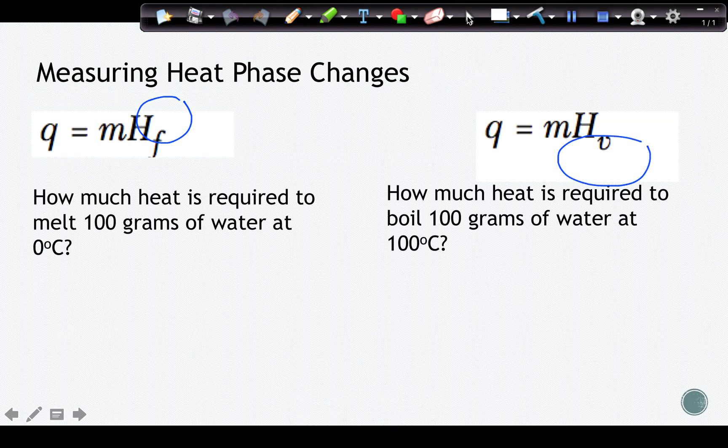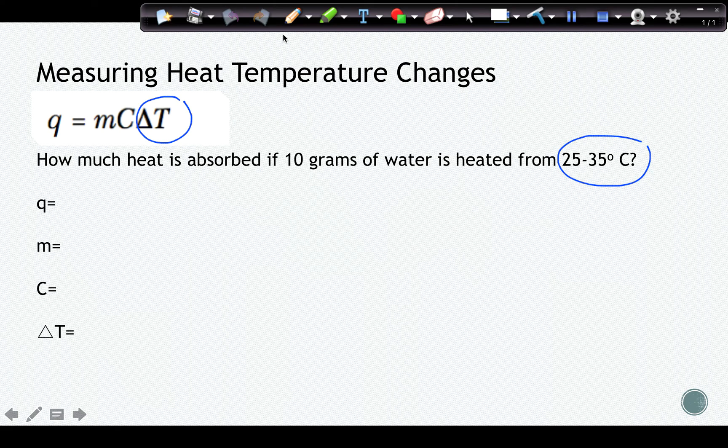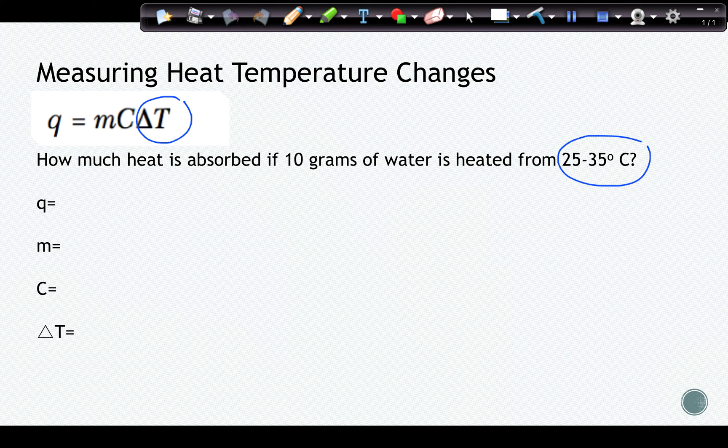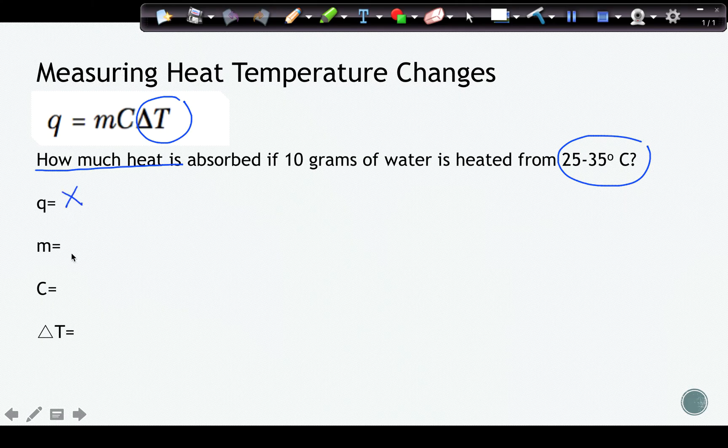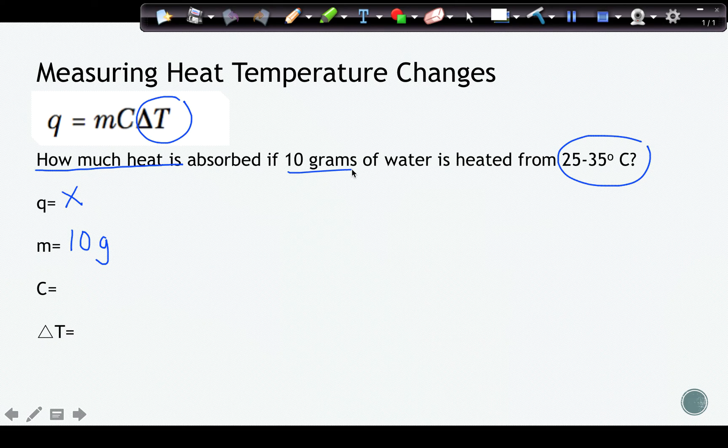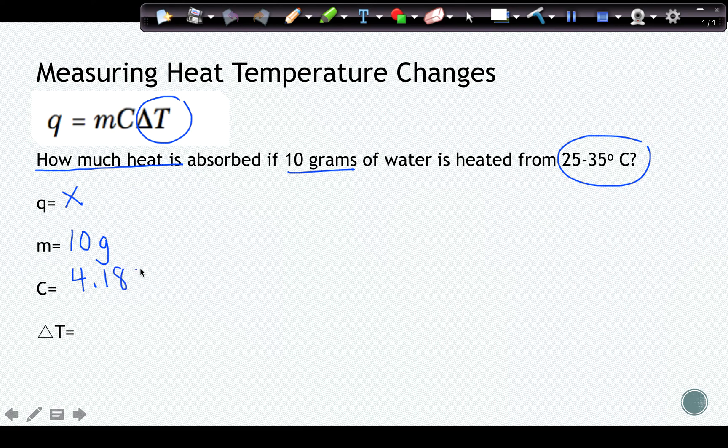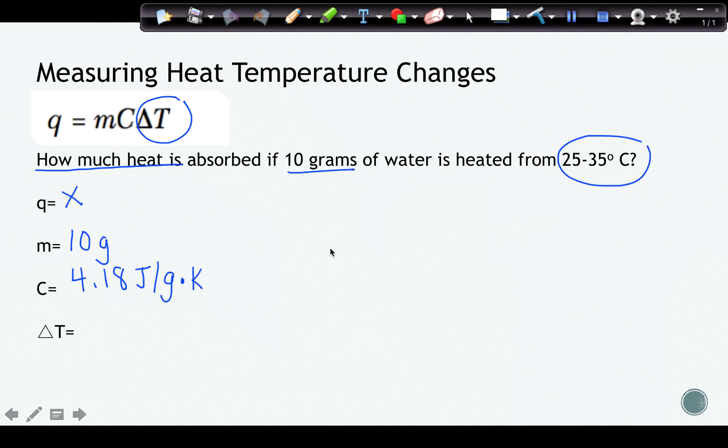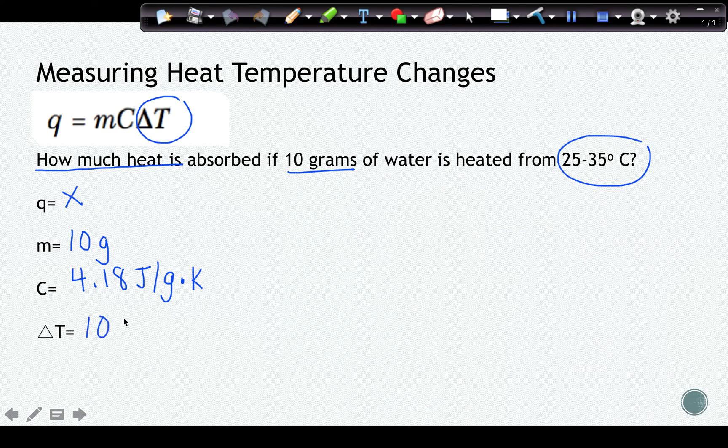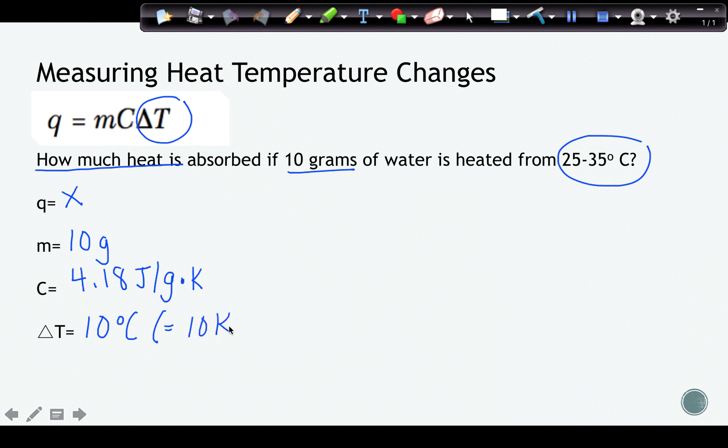We're going to fill in all of our variables. And for this particular question, as I read through it, I see that my Q, they ask me how much heat. So Q is X. My mass is usually measured in grams, so is 10 grams. My C value, which is on table B, 4.18 joules per gram times Kelvin. And my change in temperature, which is 35 minus 25, is 10 degrees Celsius, which for a delta T, that also equals the same value in Kelvins because the size of the degree is the same.